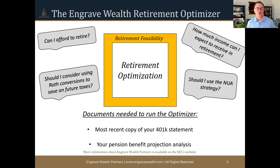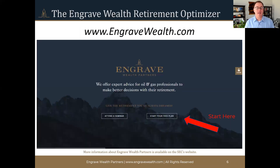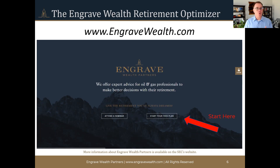To build the optimization plan, you can simply send us some basic information by going to our website at engravewealth.com. Click the button that says 'start your free plan,' and we'll be glad to get working on that analysis immediately, providing it back to you within 24 to 48 hours using a Zoom meeting or meeting in person. I thank you for your time today. Please be sure to tune into the next video where we're going to dive into the pension decision — annuity versus lump sum — and the tax implications of both. Thanks for being here today.